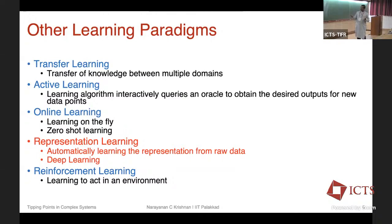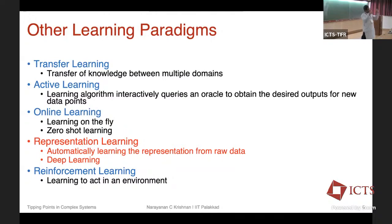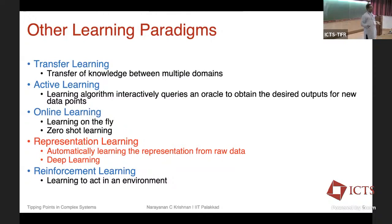Modern day machine learning is primarily based on representation learning — how do you automatically learn a representation from the raw data? Just in the previous lecture, Dr. Guttel was talking about autocorrelation, skewness, and other properties which a scientific expert figures out are important to extract in order to model a certain task. The goal of representation learning is allowing the model to figure out what it thinks is important to do a particular task. The downside is it remains a mystery to us — what is it learning? Can we physically quantify it?